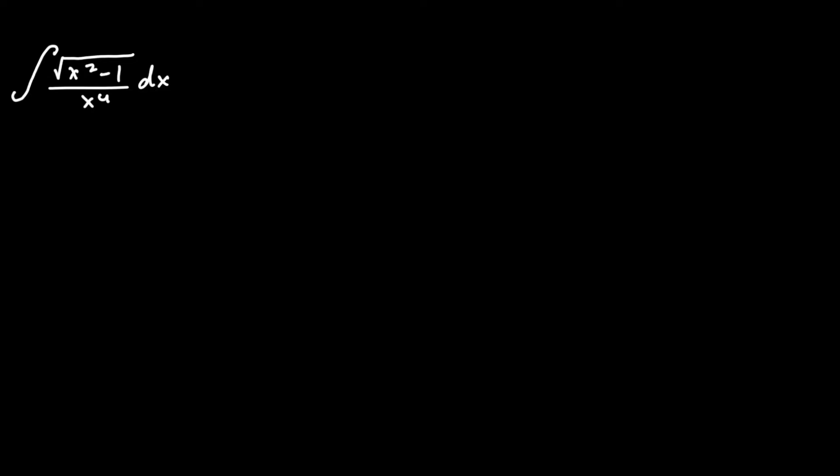We can see from the numerator that this is in the general form of square root of bx squared minus a squared, where b and a are constants.